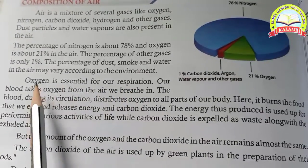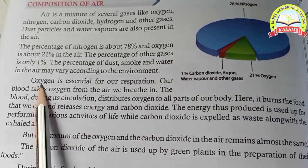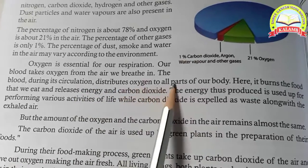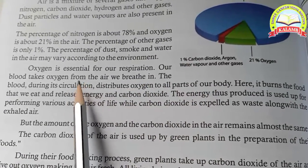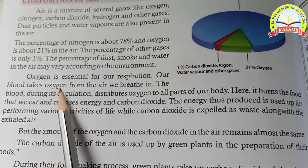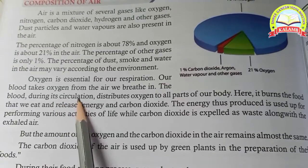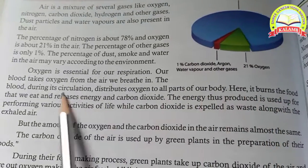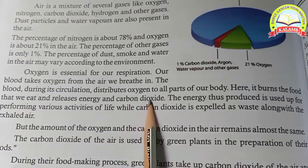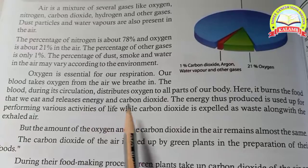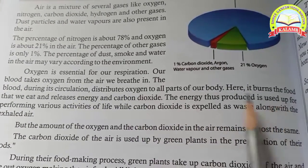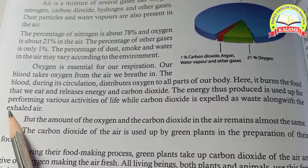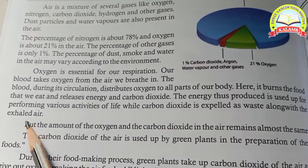Oxygen is essential for our respiration. Oxygen is the most important for our respiration. Our blood takes oxygen from the air we breathe in. During circulation, blood distributes oxygen to all parts of the body. Carbon dioxide is expelled as waste along with the exhaled air.